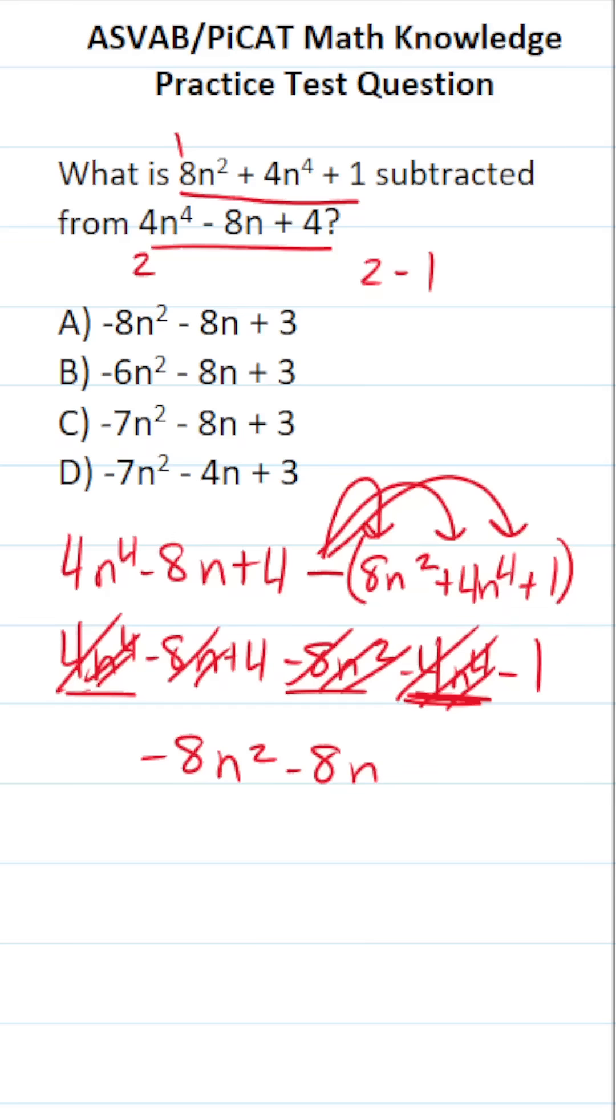And then finally, we have 4 and negative 1. 4 plus negative 1 is simply going to be 3. So this is the result when we subtract these two polynomials, and you can see it is A.